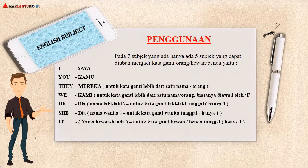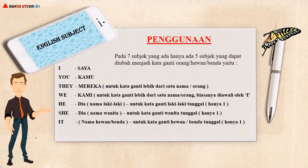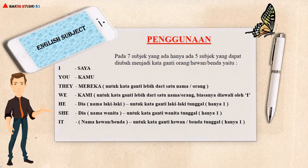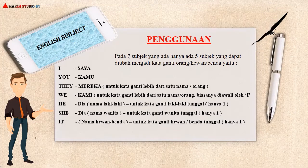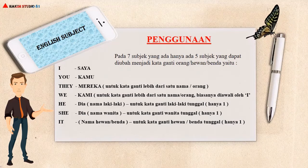Lalu yang terakhir adalah It, digunakan untuk kata ganti hewan atau benda tunggal atau hanya satu. Seperti misalnya Tiger, Chicken, Cow, dan lain-lain. Jika berkaitan dengan benda, seperti table, chair, lamp, dan lain-lain.